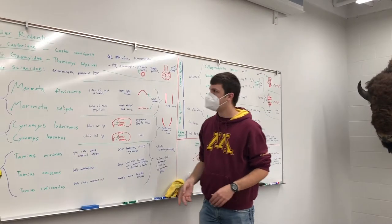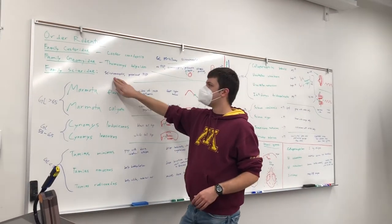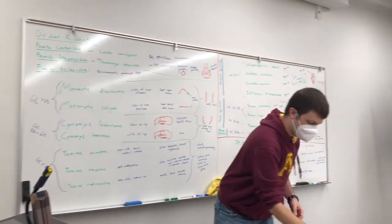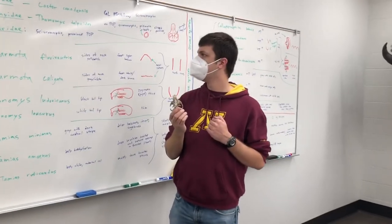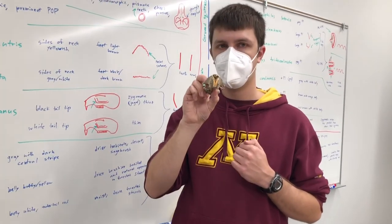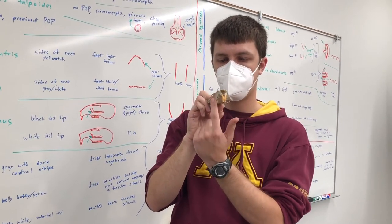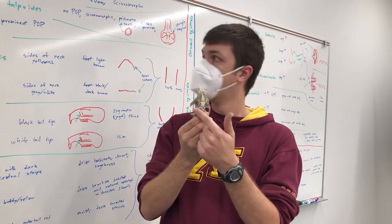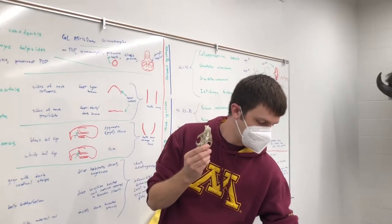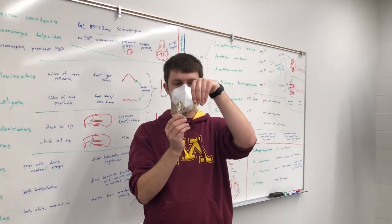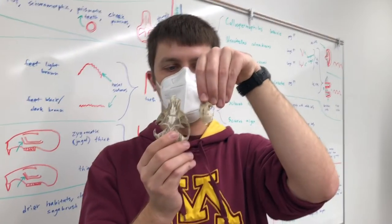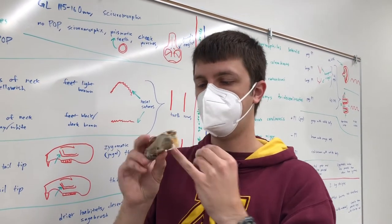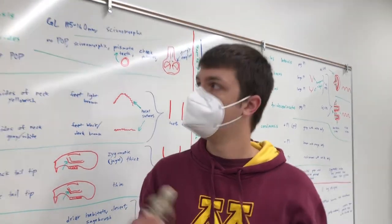The last family is Sciuridae — sciuromorphic and, as I mentioned, with a prominent post-orbital process. Here's a marmot; the largest squirrels in Montana are marmots. Looking at the front you can see the flat zygomatic plate, and from the top you see these enormous post-orbital processes. Even on smaller species like the red squirrel, you can still see the post-orbital process. So if it has the flat plate and the post-orbital process, it's a squirrel — family Sciuridae.